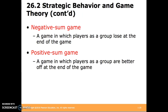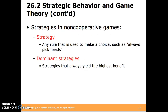A negative-sum game is a game in which players as a group lose at the end of the game. A positive-sum game is the opposite — a game in which players as a group are better off at the end. A dominant strategy is a strategy that always yields the highest benefit — that is, no matter what the other players play, you'll be best off by playing this strategy.